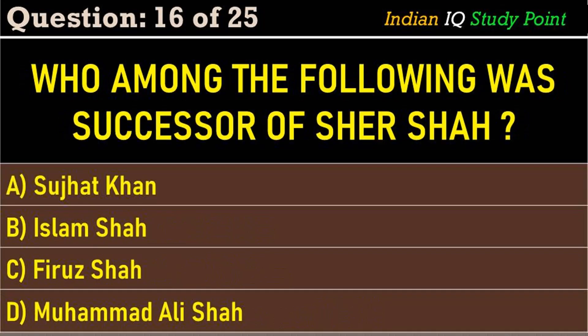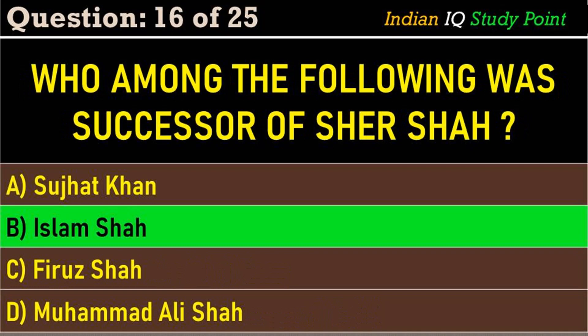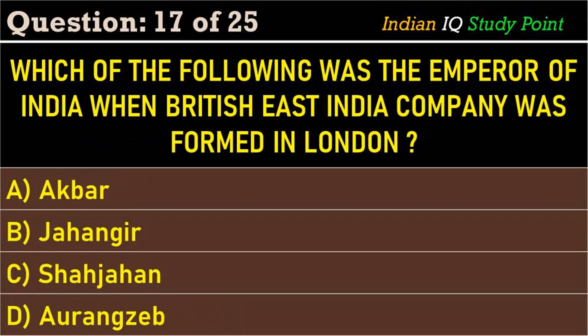Coming to the next question: who among the following was the successor of Sher Shah? Option A. Sujhat Khan, B. Islam Shah, C. Firuz Shah, D. Muhammad Ali Shah. And the correct answer is Option B. Islam Shah.